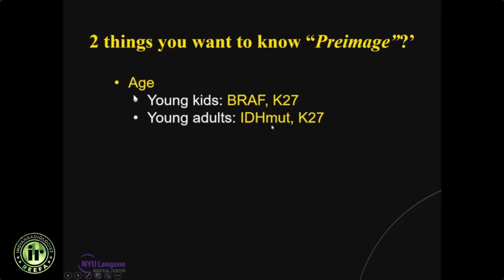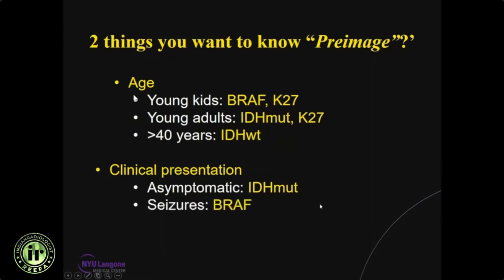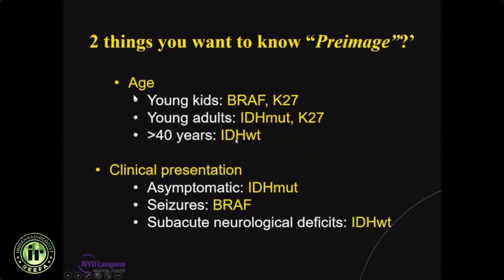If you are more than 40 years old, the chances are it's going to be an IDH wild-type glioma. The second important pre-image factor is clinical presentation. Majority of IDH-mutated tumors occurring in young adults are asymptomatic at presentation. Whereas BRAF WHO grade 1 tumors occurring in young kids usually present with seizures. And majority of IDH wild-type gliomas presenting in older patients usually present with subacute neurological deficit — these are important aspects to keep in mind before looking at images.